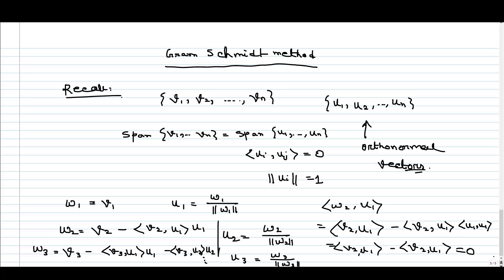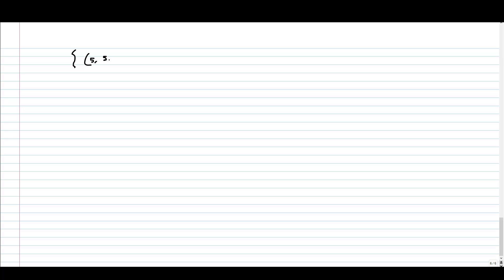Now let us take a set of linearly independent vectors and try to calculate the corresponding orthonormal set of vectors. I am considering the set (5, 5, 5) and (0, 5, 5). These are my set of linearly independent vectors. This is my v1 and this is my v2, and I want to find u1 and u2 such that they are orthogonal to each other and moreover orthonormal.